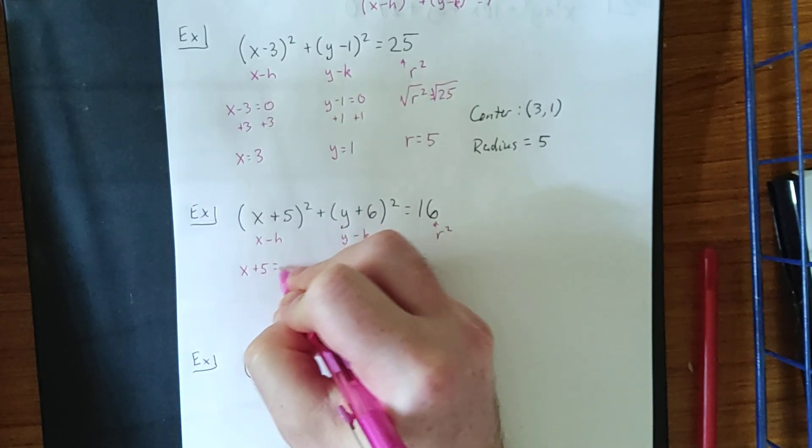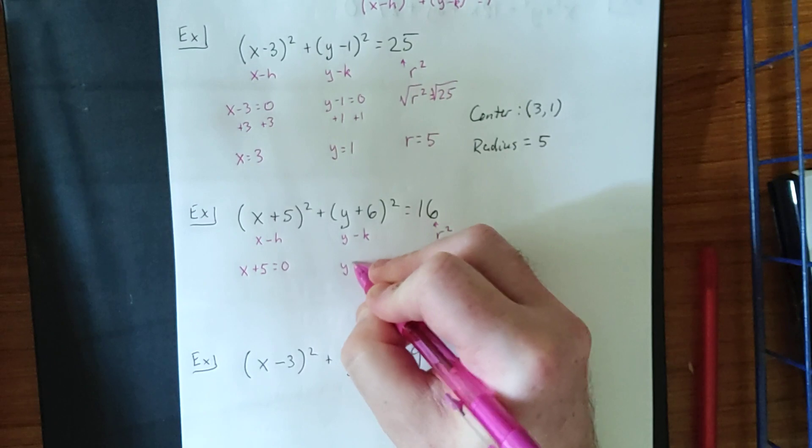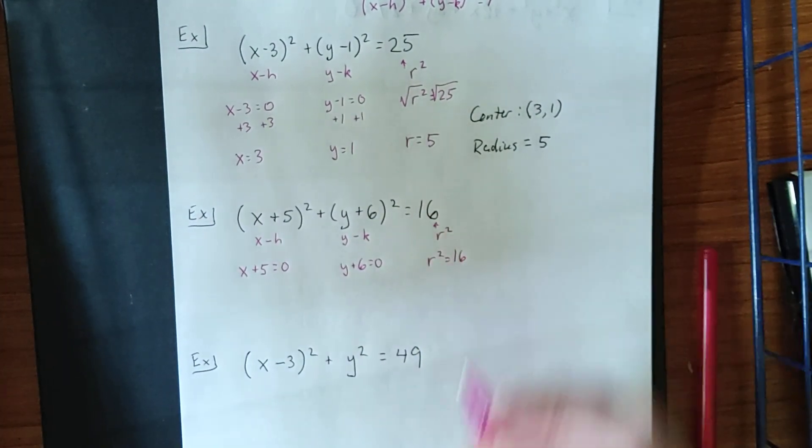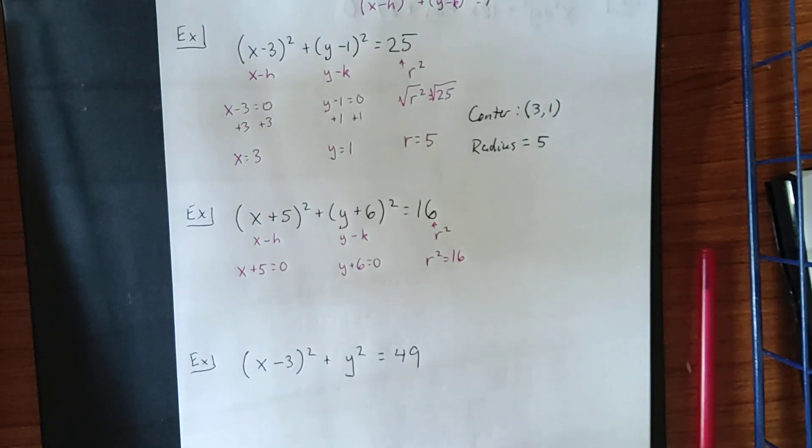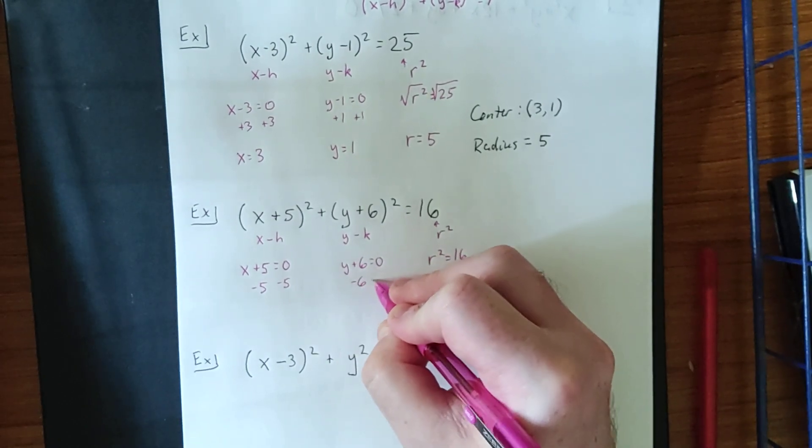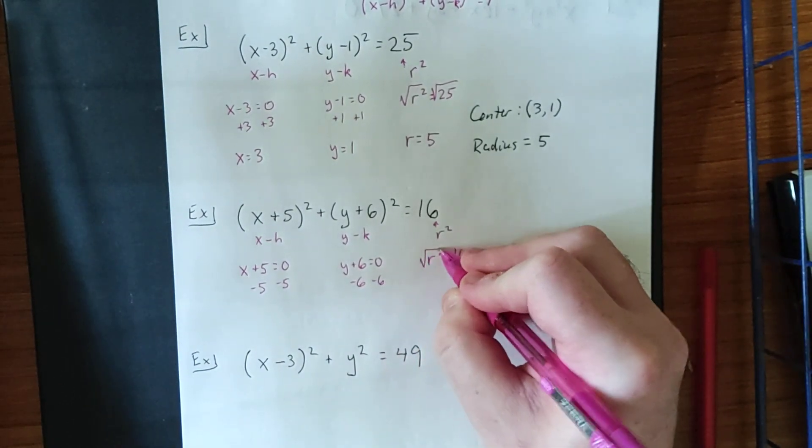Say x plus 5 is equal to 0. Say y plus 6 is equal to 0. And say r squared is equal to 16. Once again, it'll be one step of algebra to solve for x, solve for y, and to solve for r.